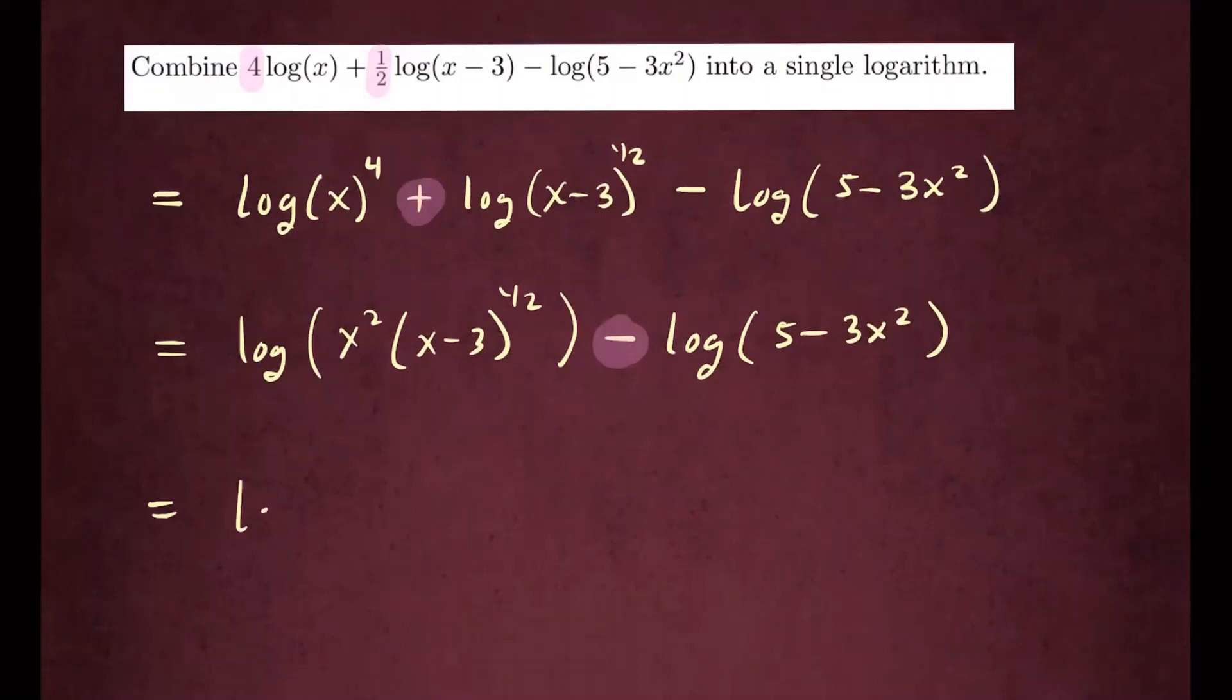So this is log of, the top will be the first term, x to the fourth times x minus three to the one half. And the bottom will be the second term, five minus three x squared, like that.